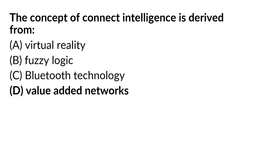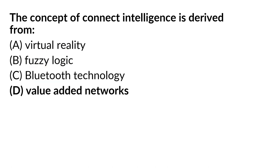The concept of connected intelligence is derived from? Options: virtual reality, function logic, Bluetooth technology, and value added networks. Connected intelligence, also known as CI, involves the coming together and sharing of knowledge among a group, and secondly it involves action or goal-oriented activity, with new knowledge as a key contribution to the organization. The correct answer is option D — the concept of connected intelligence is derived from value added networks.